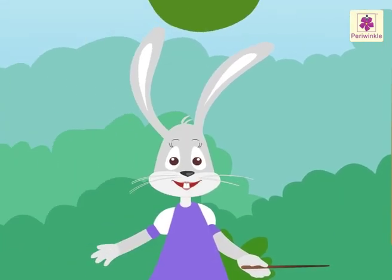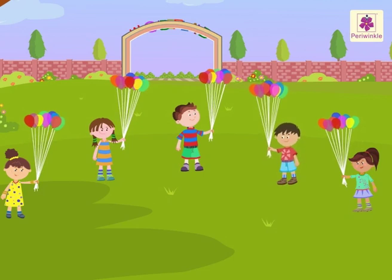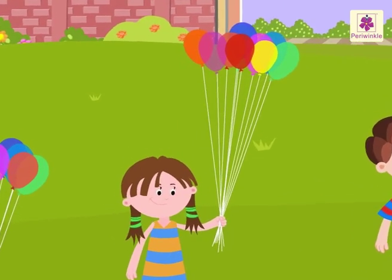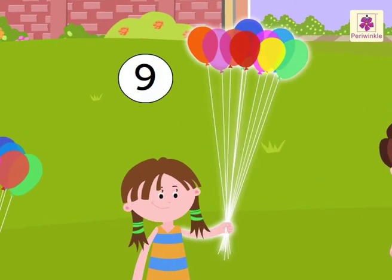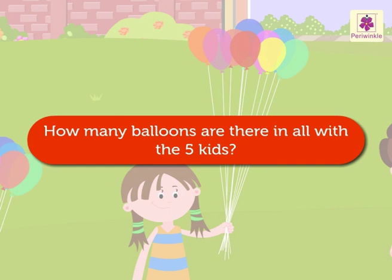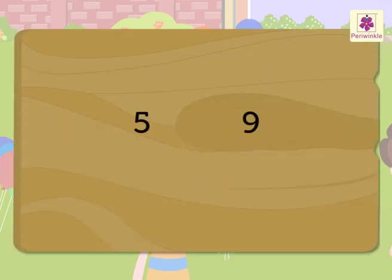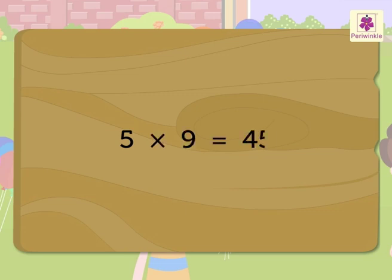Now, let us take another example. Look, there are 5 kids. Each kid has 9 balloons. How many balloons are there in all with the 5 kids? So, here we multiply the numbers 5 and 9 to get the answer. So, 5 into 9 is equal to 45.